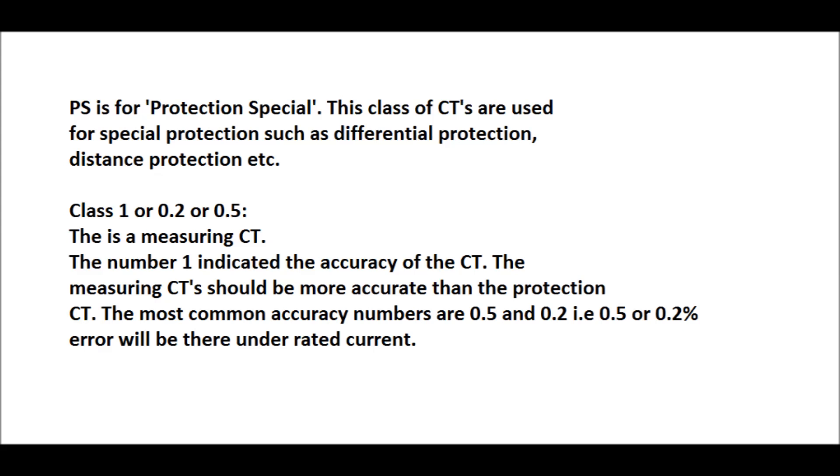There are another class that is class 1 or 0.2 or 0.5. This class is a measuring CT used for metering purpose. The number 1 indicates the accuracy of the CT. In case 100% that is rated current flow, the error shall be 1%. In case of 0.2, the error shall be 0.2%. In case of 0.5 class, the error shall be 0.5%.